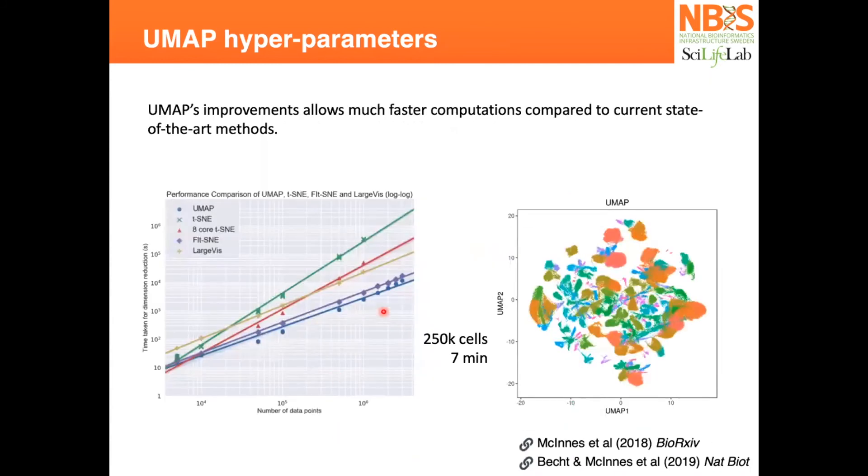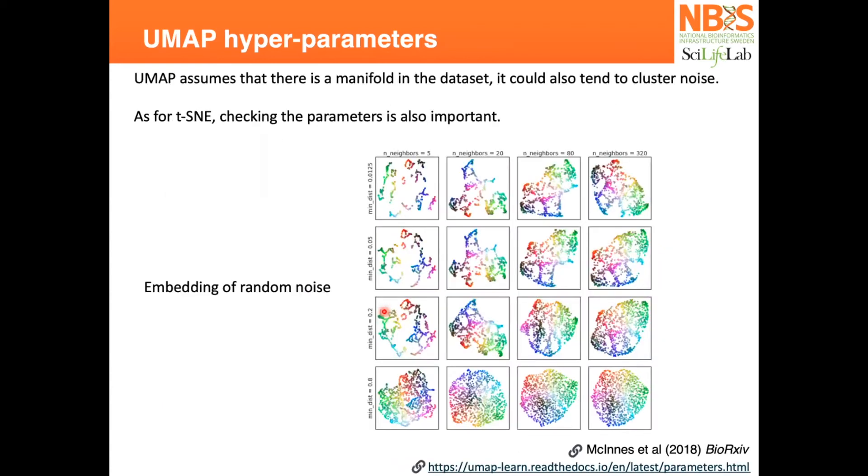Question: There's quite some difference in the size of clusters based on different parameters. Does the size of the clusters not matter? Answer: No, not in this one because this is just random noise. By changing the number of neighbors to 5, you consider the cluster sizes to be 5. If you increase to 320, you increase how many cells you can allow in a cluster.